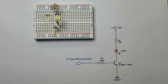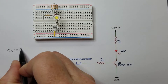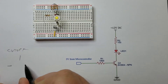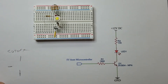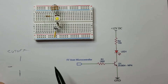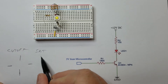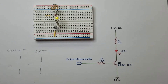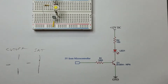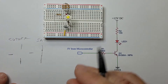A bipolar junction transistor can be used in different operating modes. One of them is called cutoff, where the transistor basically acts as an open switch — you have an open circuit, and the LED would be off. You have saturation, which is the equivalent of a closed switch, where the LED would be on. And then you have the active region, which we're not going to cover in detail here because that is what is typically used when the transistor is used as an amplifier.